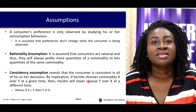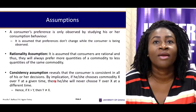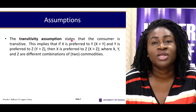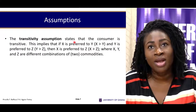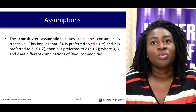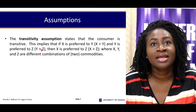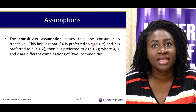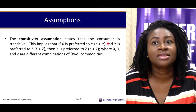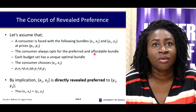Consistency means that the consumer is consistent in all his decisions. By implication, if commodity X is chosen over commodity Y, then he or she will never change his or her mind in choosing Y over X. The transitivity assumption, which we discussed in the ordinal approach, also applies here — if X is preferred to Y and Y is preferred to Z, then X is preferred to Z.